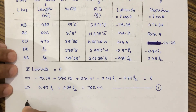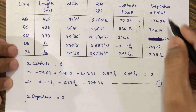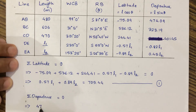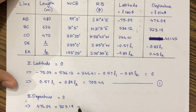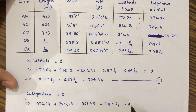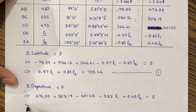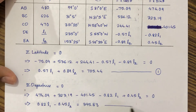Next, we calculate the summation of departures, which also equals zero. Adding all departure values: 474.09 + 323.19 − 401.45 − 0.82L1 + 0.45L2 = 0. On solving, we get: 0.82L1 − 0.45L2 = 395.83. Call this equation 2.